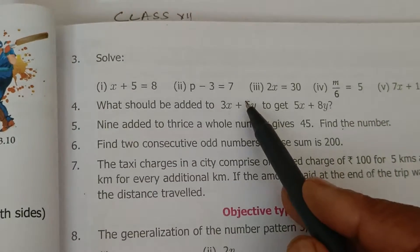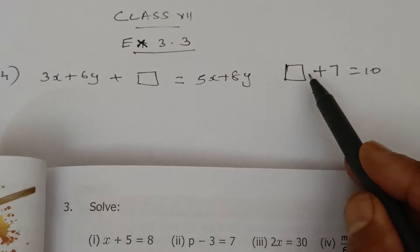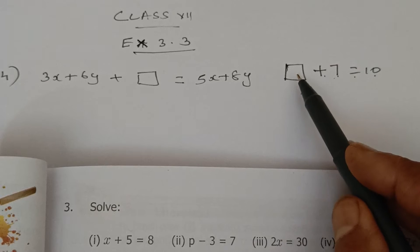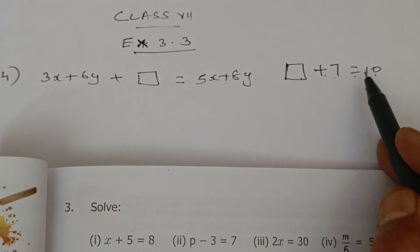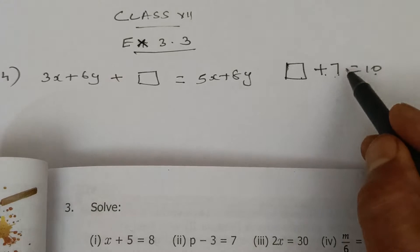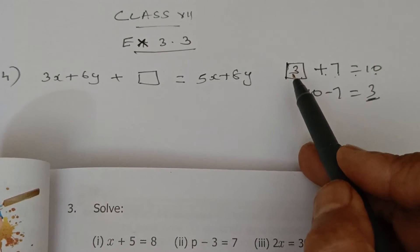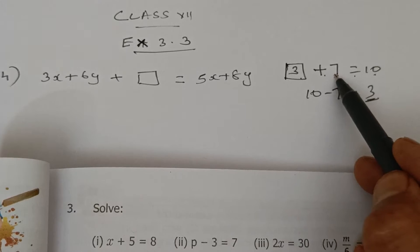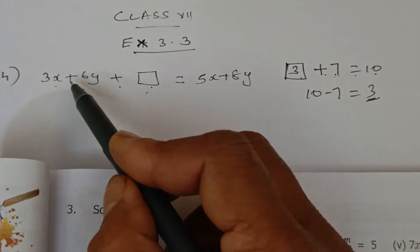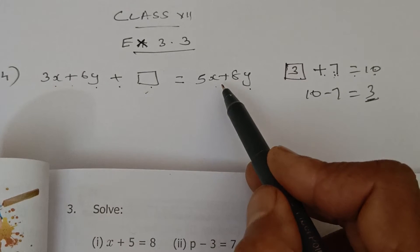Here we have numbers, but in the original question we have algebraic expressions. What should be added to 7 to get 10? Getting 10 means 10 is the answer. Children, can you guess? 7 plus what gives 10? Yes, it is 3. How do we get 3? It is 10 minus 7. So to find the missing number, subtract the given number from the answer. We apply the same rule here: from 5x + 8y subtract 3x + 6y.